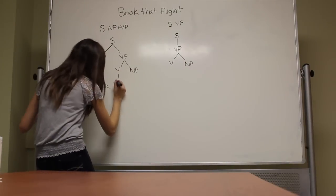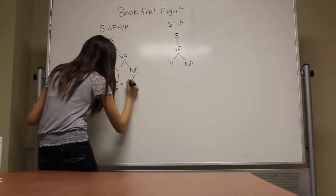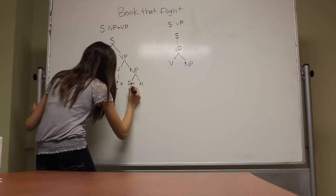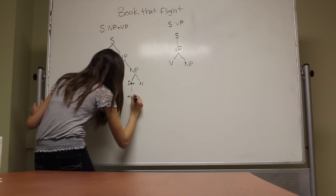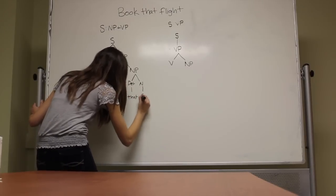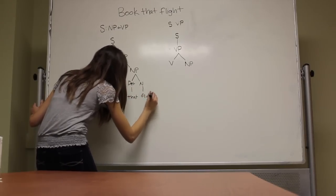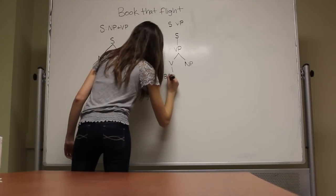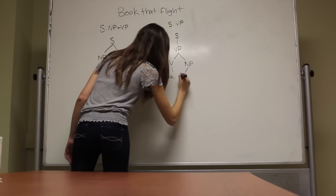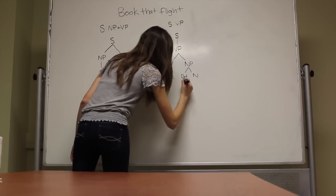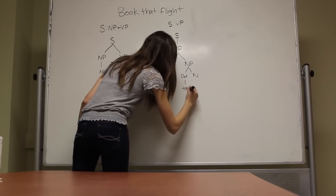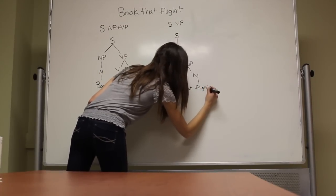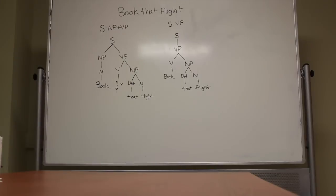We proceed to break down the sentence further, this time looking at the different combinations of phrase structures that can make up a verb phrase. The best fit in this case is verb phrase → verb and noun phrase. Using this recursive technique to deconstruct the sentence into its most basic phrase structure yields the final tree.